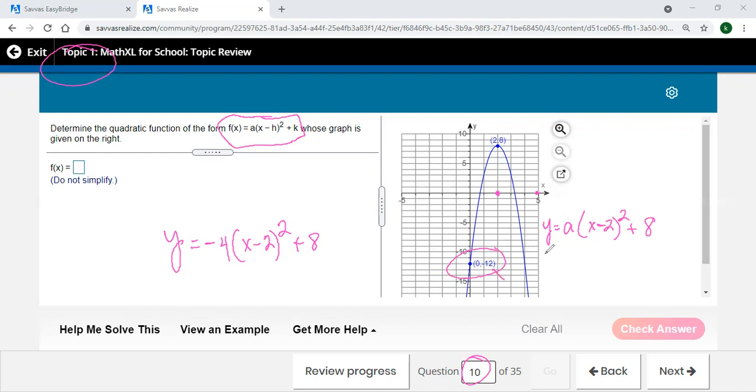So the y there is the negative 12. We're still trying to figure out that a, the stretch factor, and the 0 here is the x, so we'll put that in.